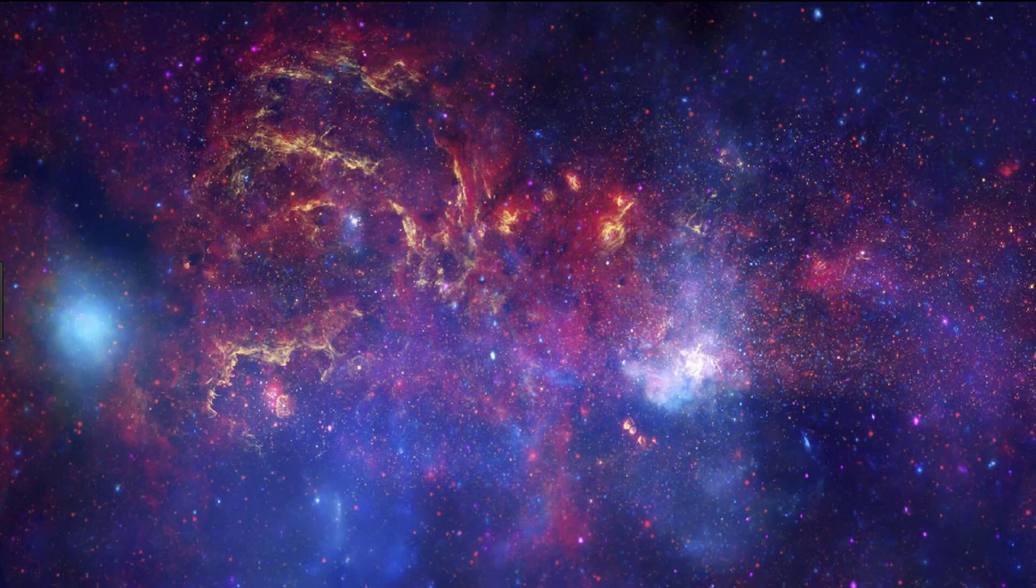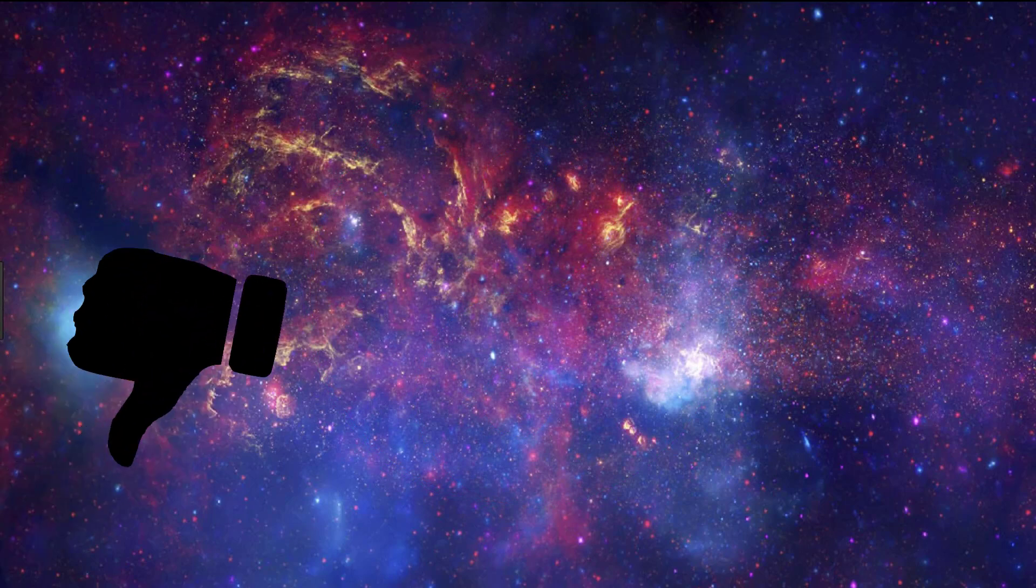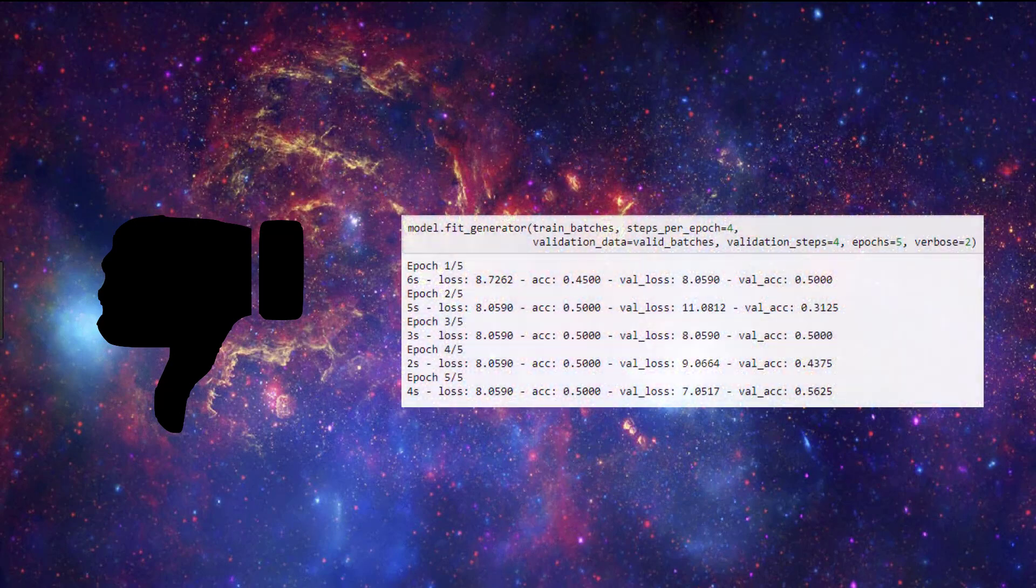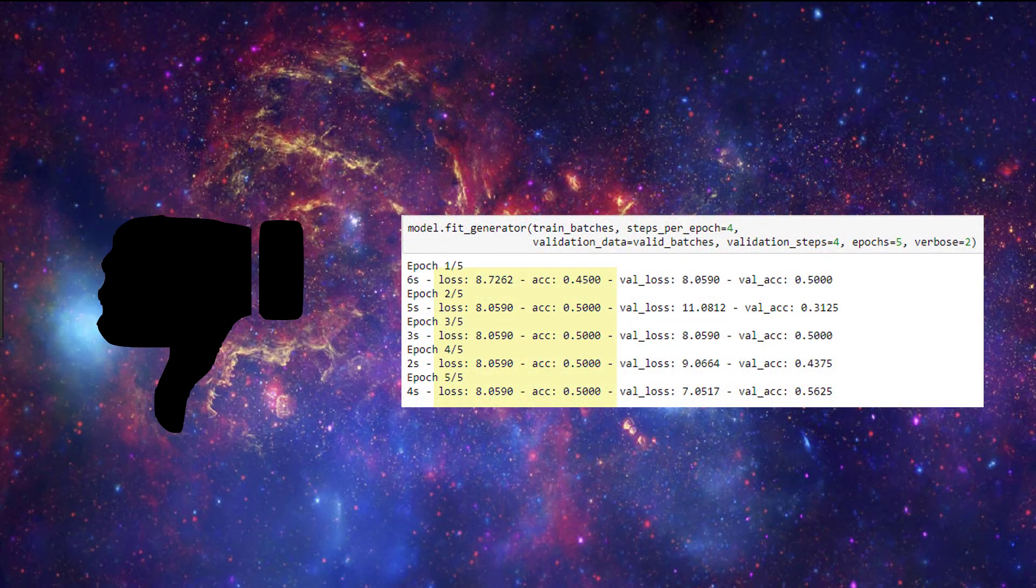We can tell that a model is underfitting when the metrics given for the training data are poor, meaning that the training accuracy of the model is low and/or the training loss is high. If the model is unable to accurately classify data it was trained on, it's likely not going to do well at predicting on data it hasn't seen before.